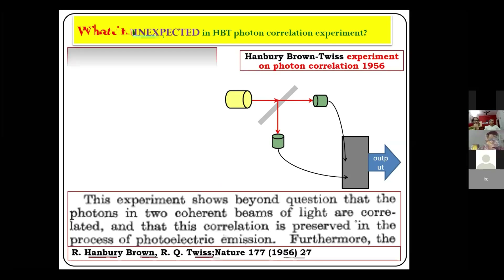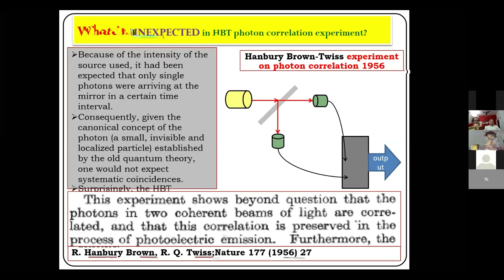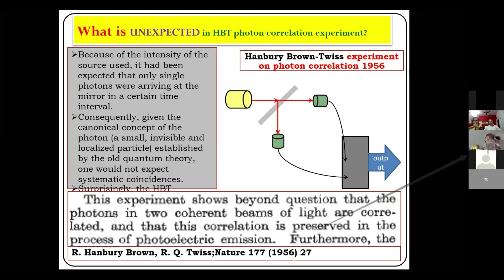I quote from their 1956 paper: 'This experiment shows beyond question that the photons in two coherent beams of light are correlated.' That means one photon is striking photomultiplier 1 and the second photon is also striking photomultiplier 2 simultaneously. This experiment shows beyond question that the photons in two coherent beams of light are correlated, and that this correlation is preserved in the process of photoelectric emission.